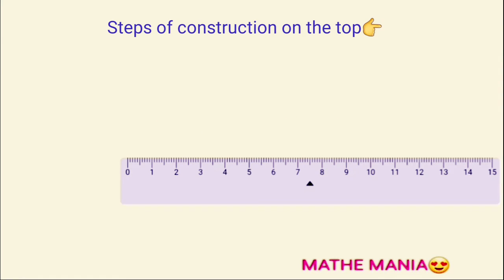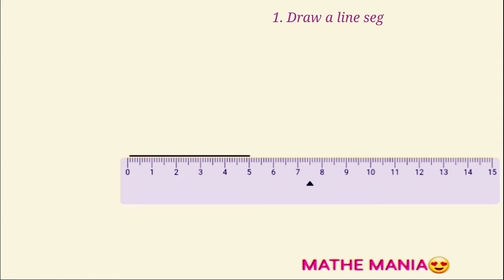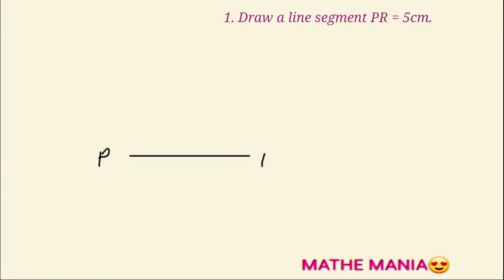Keeping your scale at the center of the page, draw a line segment of 5 cm that is equal to PR. Name the endpoints as P and R.